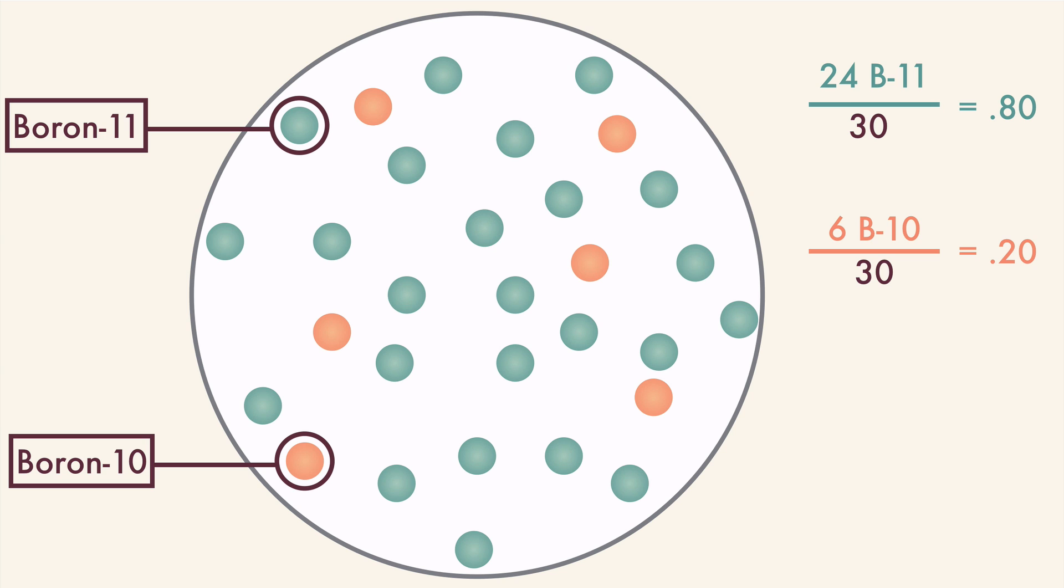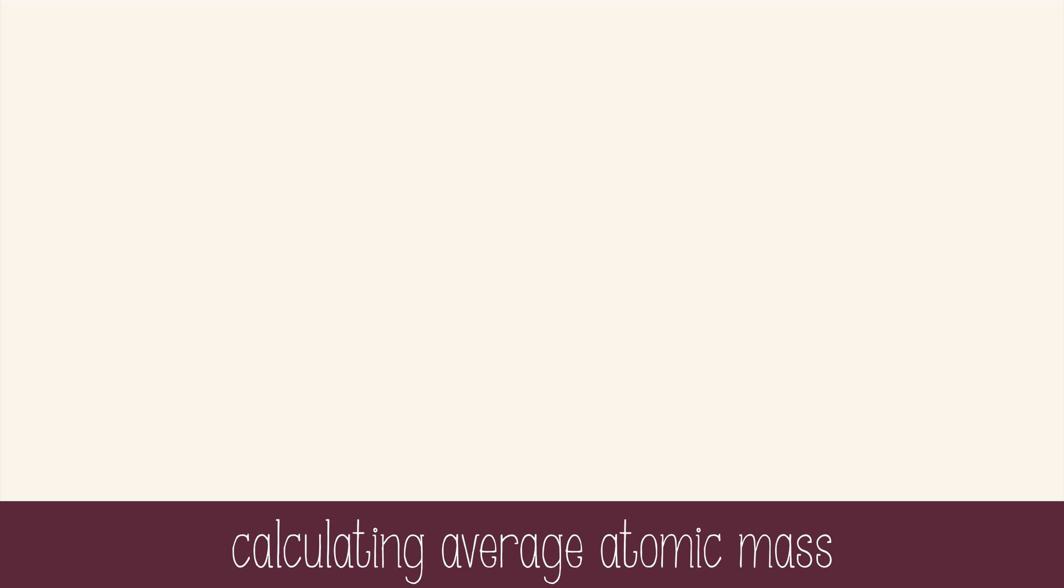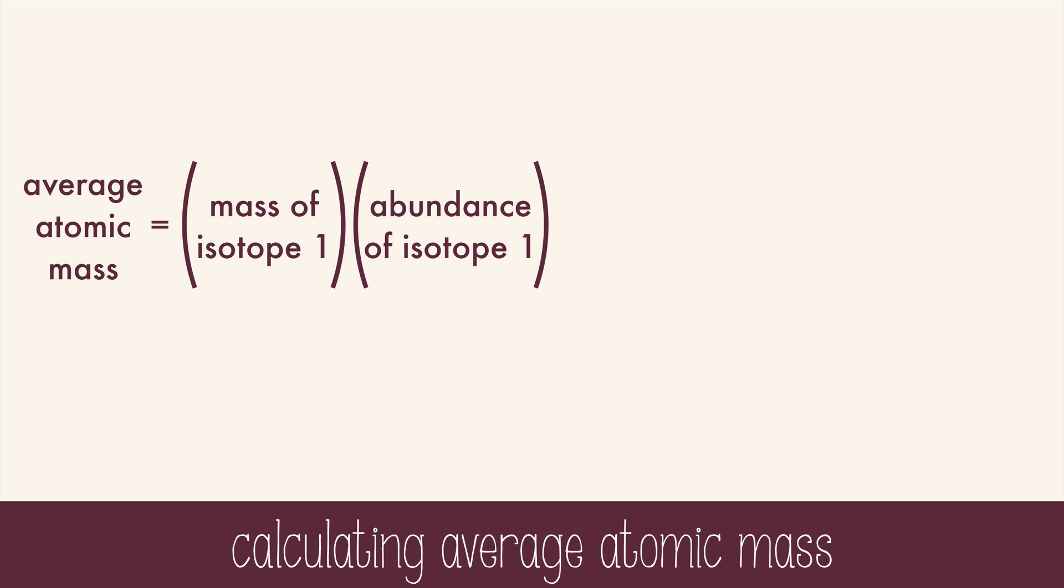We can use that information, the natural abundance, in our weighted average. The average atomic mass is equal to the mass of isotope 1 times its abundance, which is a percentage in decimal form, plus the mass of isotope 2 times the abundance of isotope 2.